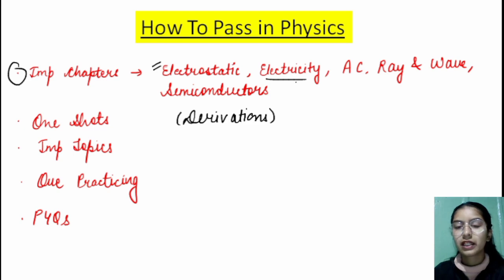And current electricity portion, if we see it, has a lot of Kirchhoff's law related questions. Then we have AC, so alternating current, like transformer, AC generator.